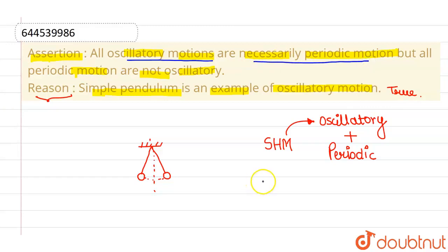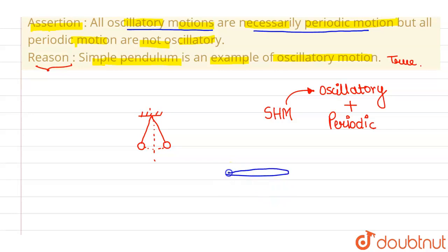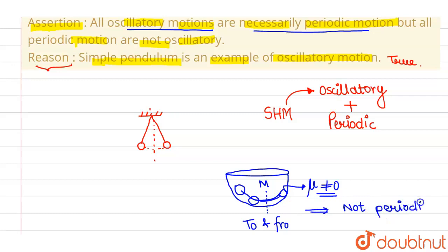Now coming to the assertion: all oscillatory motions are necessarily periodic. This part is not true. All oscillatory motions need not be periodic. Suppose we have a bowl with friction on its surface, so the frictional coefficient is non-zero. A ball oscillating inside it does to-and-fro motion about the mean position, but since energy is being lost due to friction, this motion is not periodic.